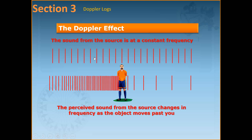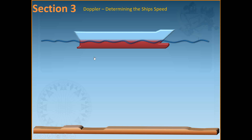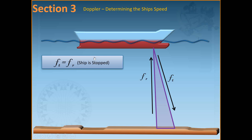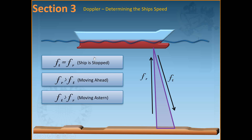The Doppler principle is applied to the ship's log in the following way. A beam of sound energy or acoustic energy is transmitted from the ship at a certain frequency. The energy is reflected from the sea bed or the water layer and returns to the ship where it is detected and its frequency measured for comparison with the transmitted frequency — FT is the transmitted frequency and FR is the received frequency. When comparing both, if the frequency received is greater than the frequency transmitted, the ship must be moving ahead.